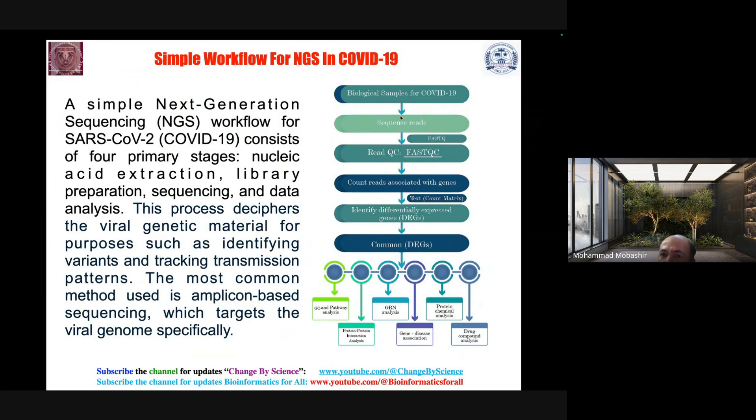You can think another way - this is the workflow for NGS in COVID-19. A simple next generation sequencing workflow for COVID-19 consists of four major primary stages: nucleic acid extraction, library preparation, sequencing and data analysis. This process sees first the viral genetic material for purposes such as identifying variants and tracking transmission patterns. The most common method used is amplicon-based sequencing which targets the viral genome specifically. Finally, when you've analyzed your data up to differentially expressed genes, you can think about the functional assay.